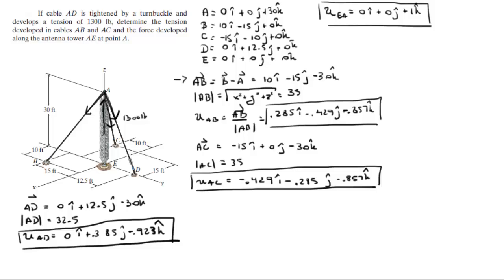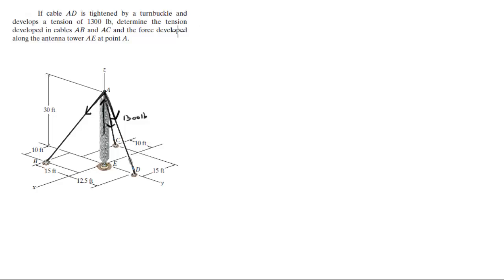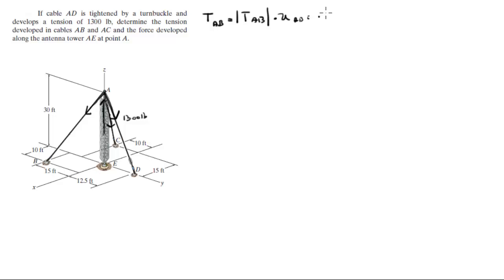Now that we have all our unit vectors, we can find the Cartesian vector form of our forces. The tension developed at AB equals the magnitude of T_AB times the unit vector AB, which gives us 0.285·AB i - 0.429·AB j - 0.857·AB k.